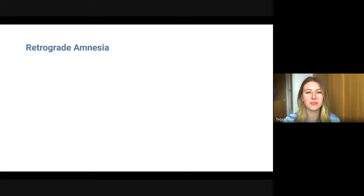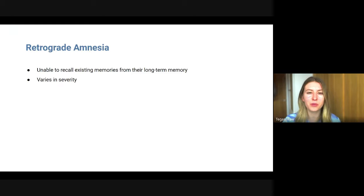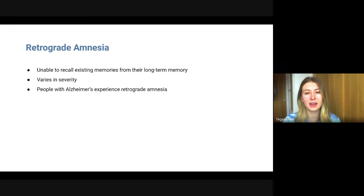The other type is retrograde amnesia — this is when you're unable to recall existing memories from your long-term memory. It varies in severity, from being unable to remember anything before whatever caused the amnesia, to much milder forms. This is what people with Alzheimer's tend to experience — they cannot recall past memories.